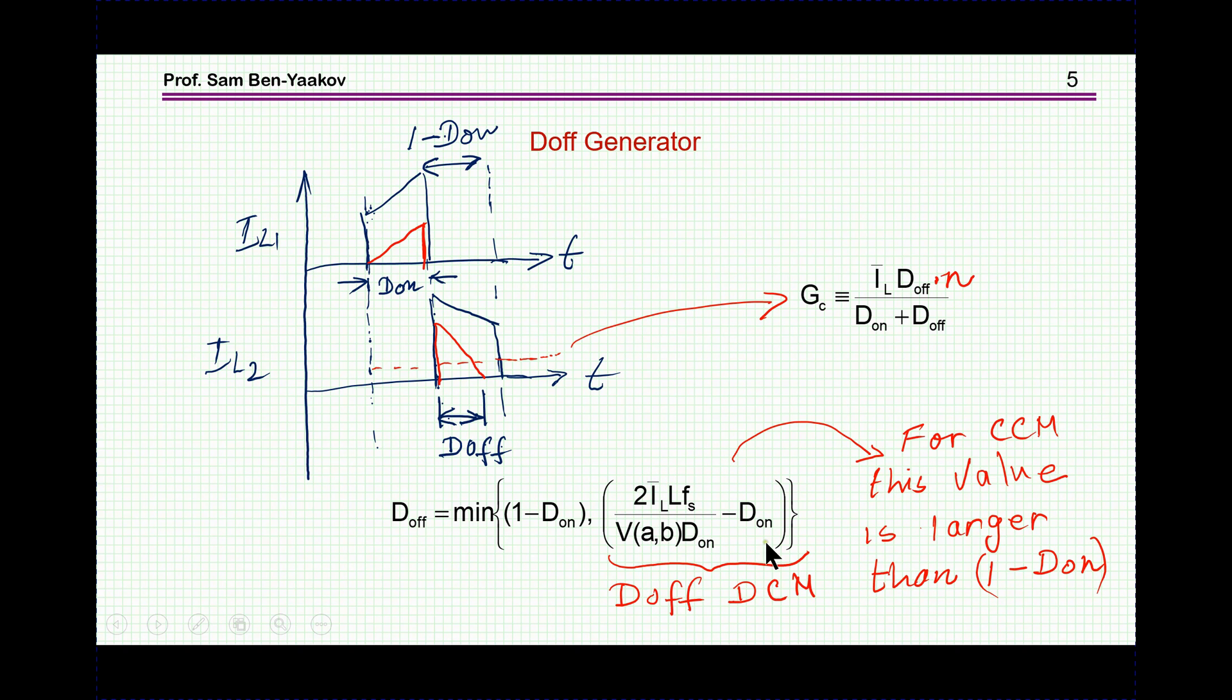So if you take the minimum between this and this, in any event, CCM or DCM, you'll get the correct DOFF. That is, in CCM, you'll get this one because this is the smallest one, and in the DCM, of course, you'll get this one, which is also the smallest between the two.